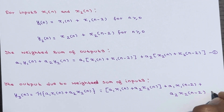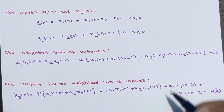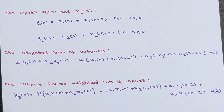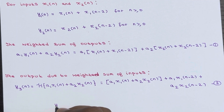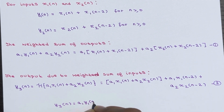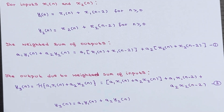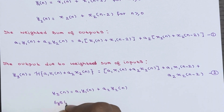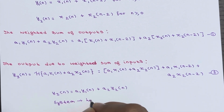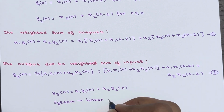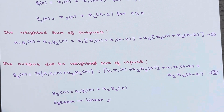Comparing both equations, they are exactly the same. So y3(n) = a1·y1(n) + a2·y2(n). Since the weighted sum of outputs equals the output due to the weighted sum of inputs, our system is a linear system.